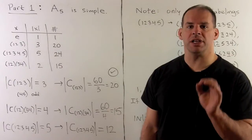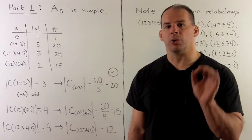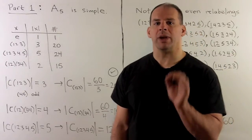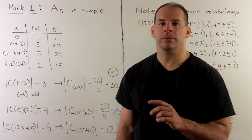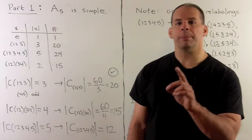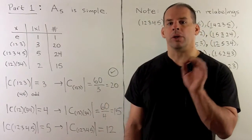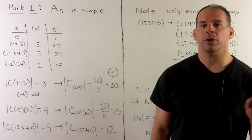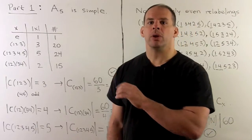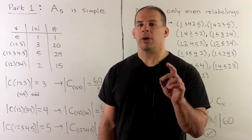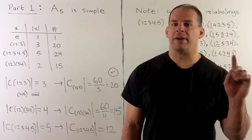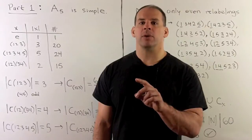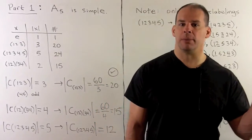As another application of conjugacy classes, we'll show that the group A_n, the alternating group on n letters, is simple when n is greater than or equal to 5. Recall, a group is simple if the only normal subgroups are the identity subgroup and the group itself. For the alternating groups, we'll have two cases. First, I'll give a second proof that A5 is simple. Then, for n greater than 5, we're going to revisit the first proof and just update some items.